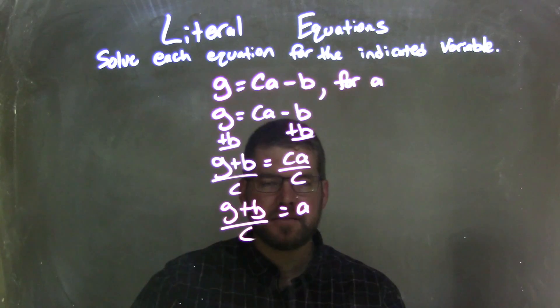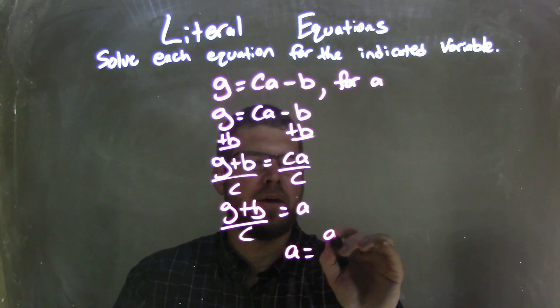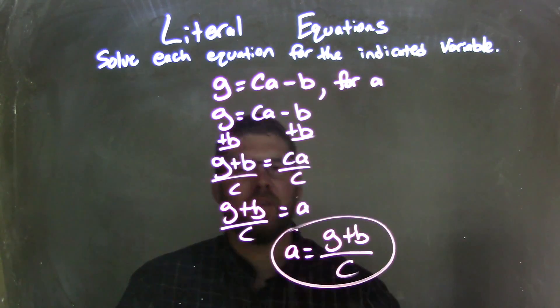I can rewrite this, and I'm going to have A come first because that looks nice and neat. So I have A equals G plus B over C, and there we are. A very simple, quick problem here.